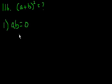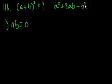Statement 1 tells us that a times b is equal to 0. That to me seems fairly useless. If we expand out a plus b squared, that's equal to a squared plus 2ab plus b squared. They're telling us that this term, 2ab, is going to be equal to 0. But we still don't know what a squared and b squared are. So statement 1 by itself, not so useful.